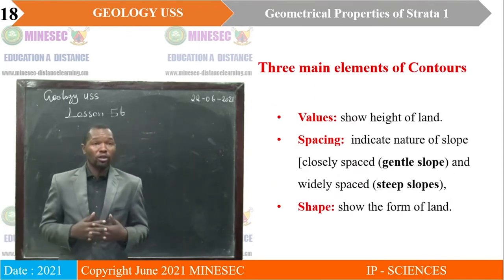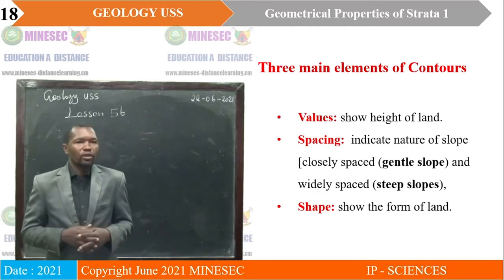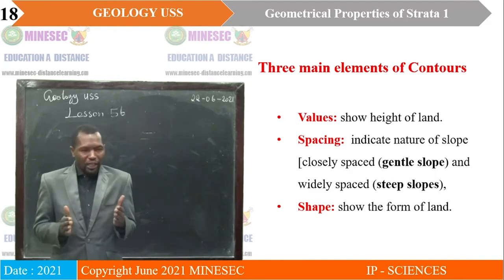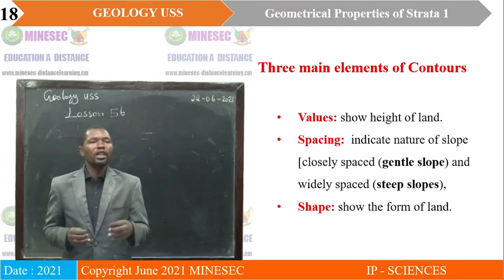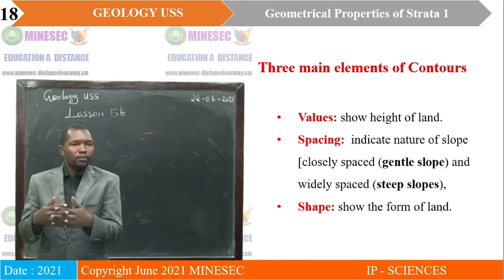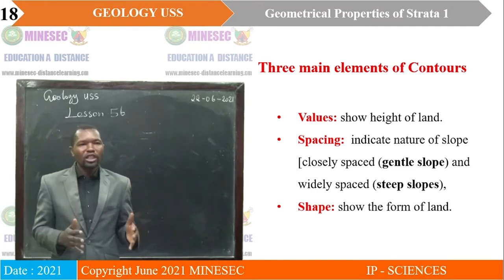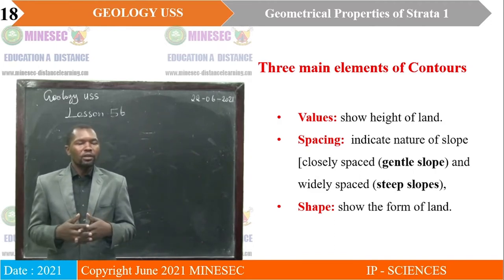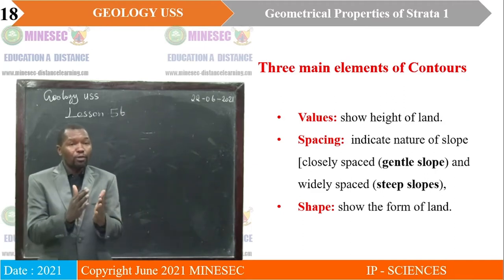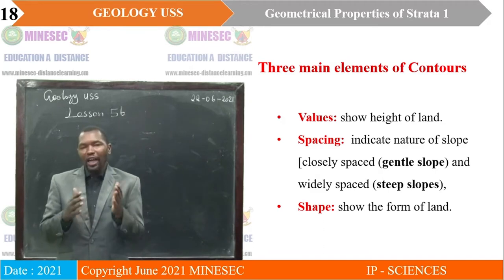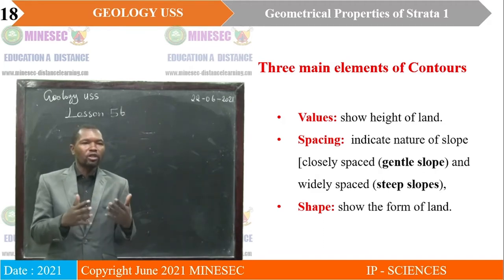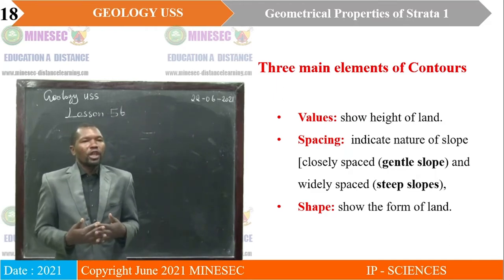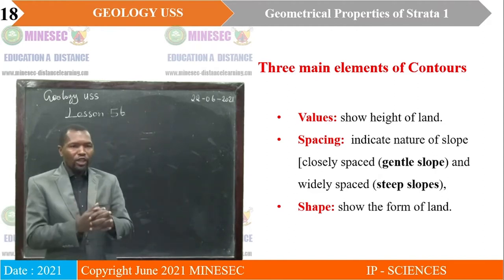There are three main elements of contours. First, contour values, which show the height of the line. Second, contour spacing — if there is a contour interval, there is a space between one contour and another, and this spacing indicates the nature of slope. Where contours are closely spaced, they indicate steep slopes; where they are widely or sparsely spaced, they indicate a gentle slope or a plane. Third, the shape of the contours shows the form of the terrain — that is why a contour gives both elevation and form.